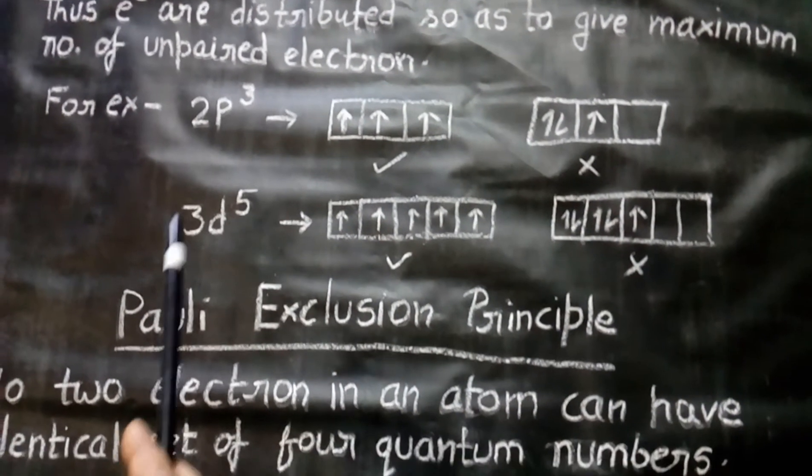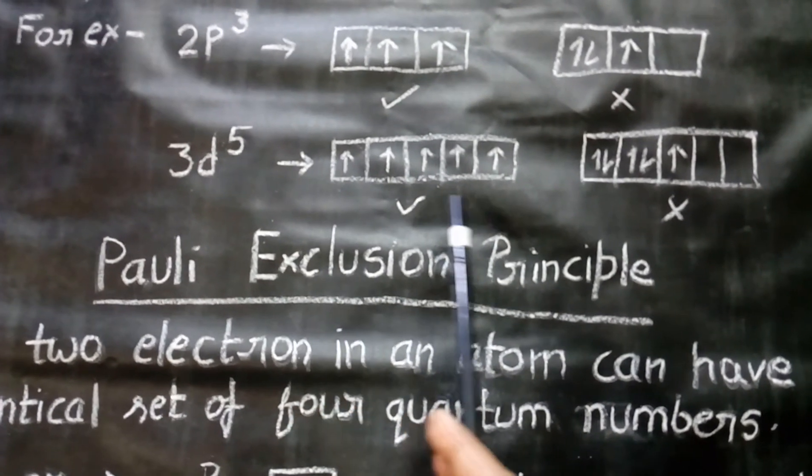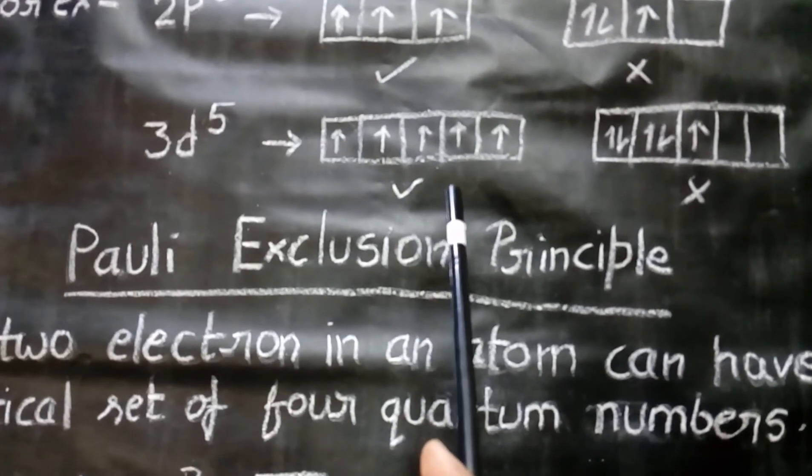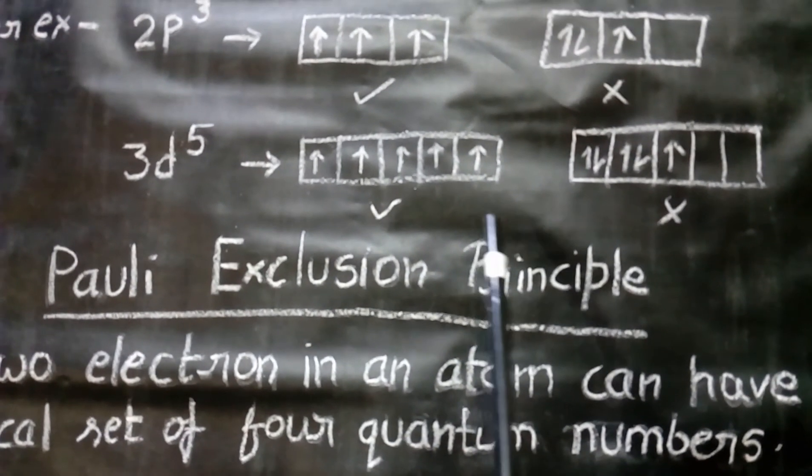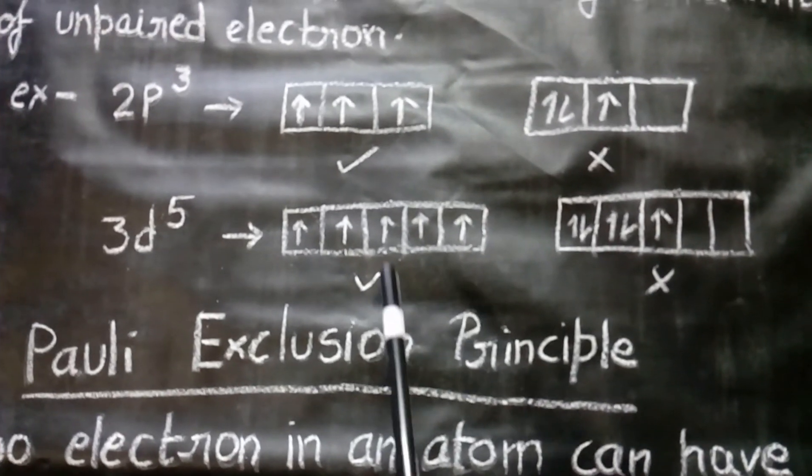Similarly, in the case of 3d5, there are 5 d-orbitals. So, the electron firstly enters all the orbitals, then the pairing of the electrons will take place. So, this will not be a pin and this will be the right answer.